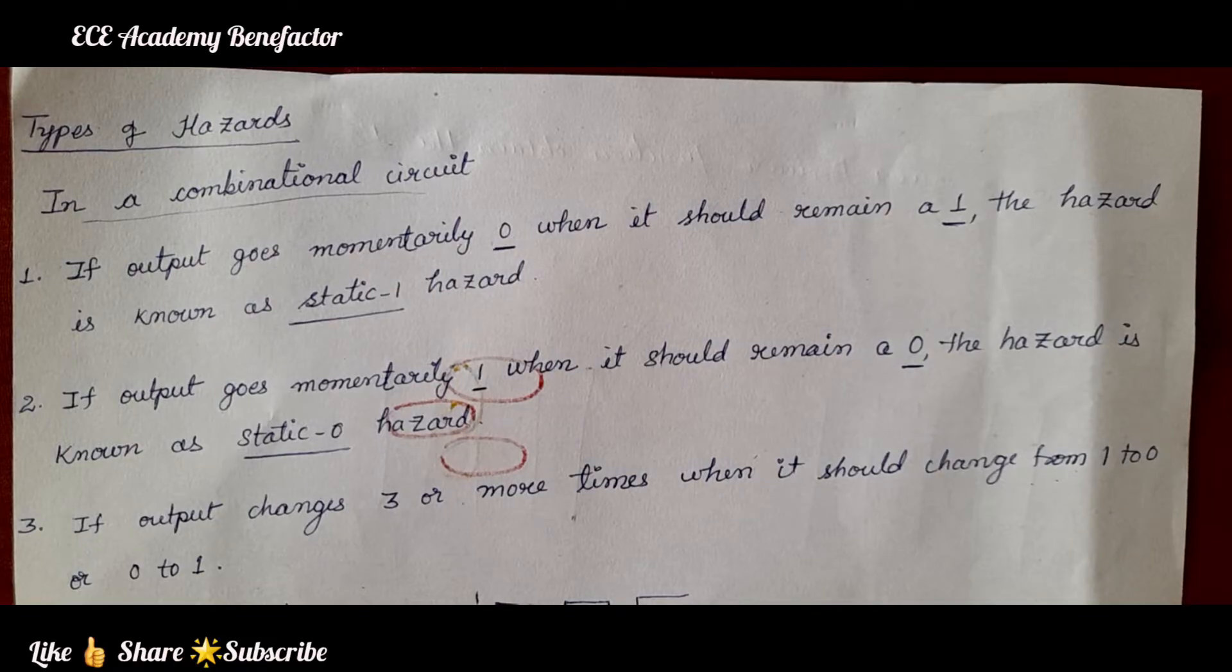What does the hazard do? It causes malfunctioning of the circuit. It means it does not show the right output value. The main cause of hazard is the propagation delay which is occurring at different paths.